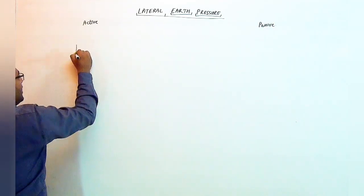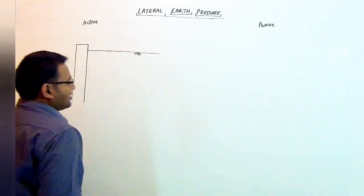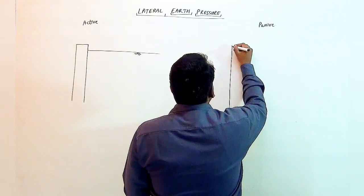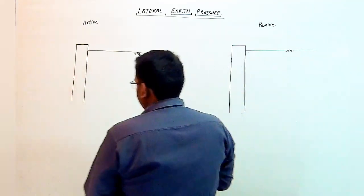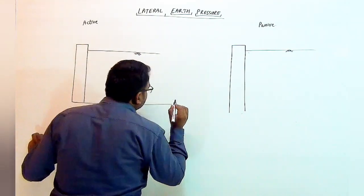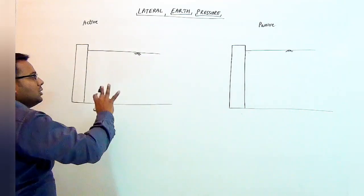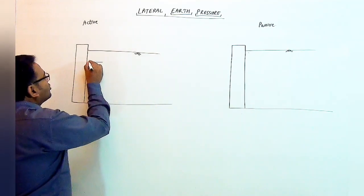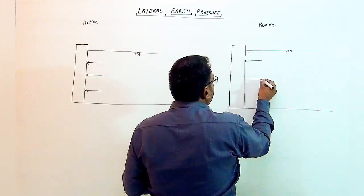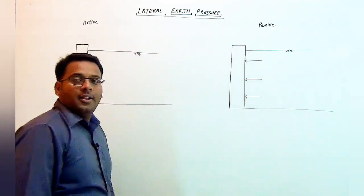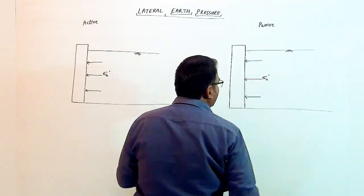I am drawing here a retaining structure with backfill on the left-hand side for the active state, and similarly on the right-hand side for the passive state, there is also a retaining structure with backfill. In both cases, the soil exerts a force on the retaining wall directed away from the backfill and towards the wall.